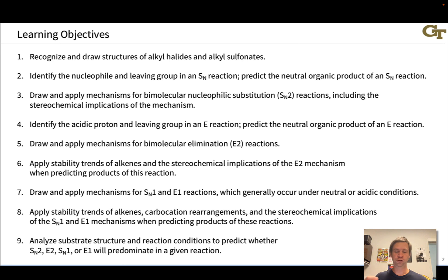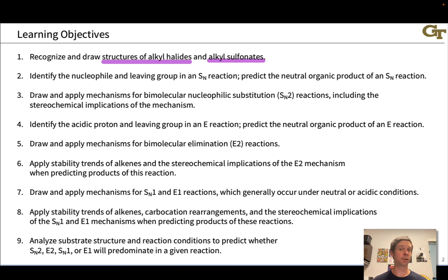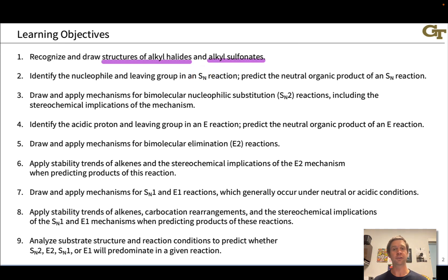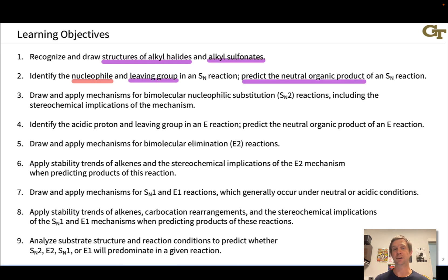We're going to start with the general structures of alkyl halides and learn to recognize them, along with their cousins, the alkyl sulfonates. These are analogs of sulfuric acid that react very similarly to alkyl halides, because they too contain a built-in good leaving group. We'll then dig into the reactivity of alkyl halides and sulfonates, focusing first on nucleophilic substitution, or SN, reactions. In any SN reaction, we'll be able to identify the nucleophile and leaving group, enabling us to predict the organic product.